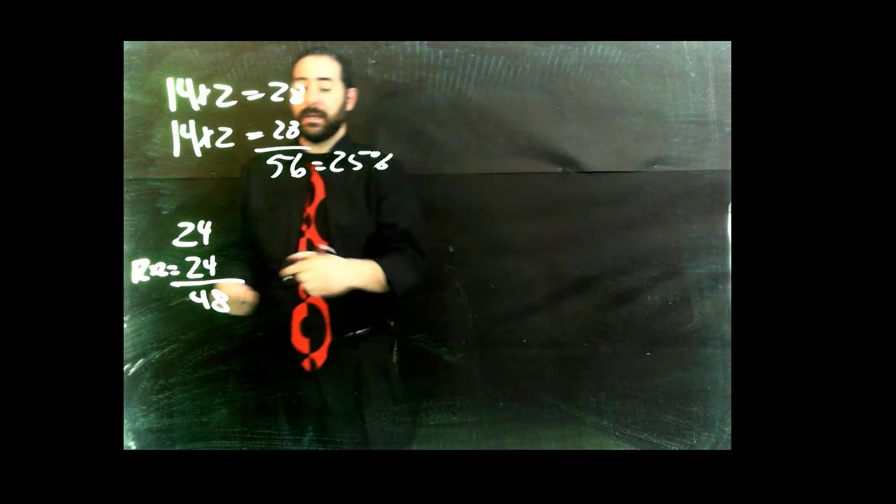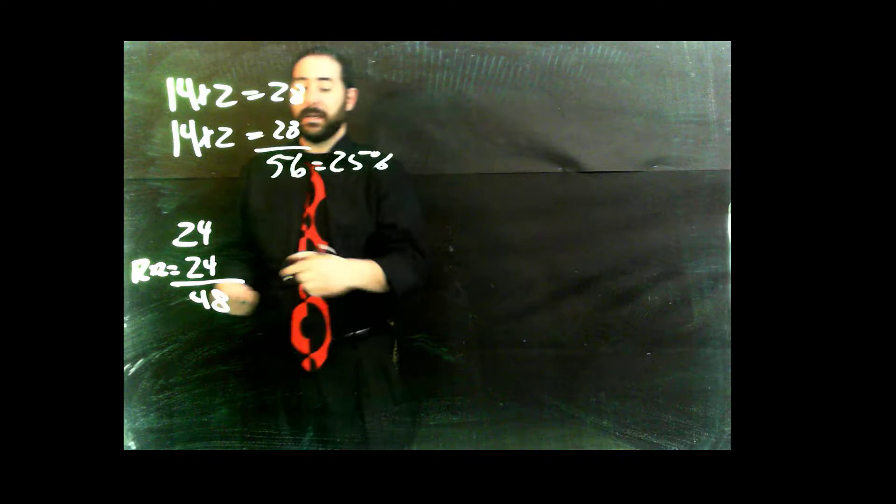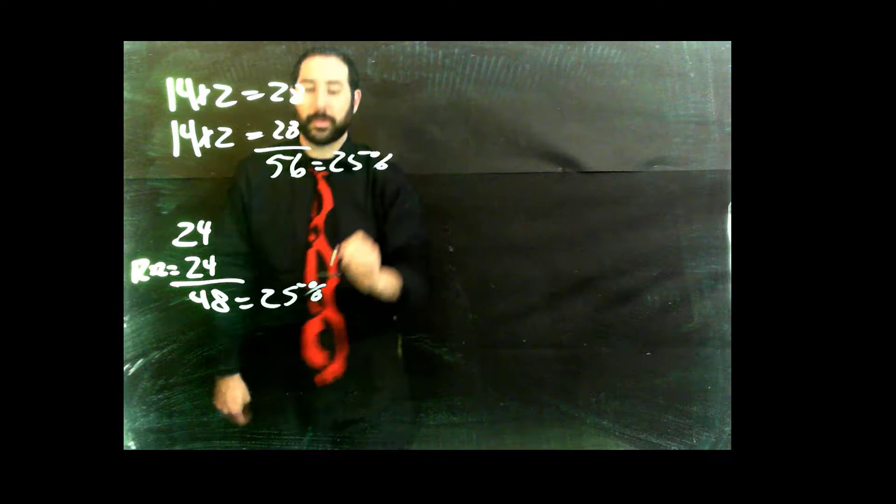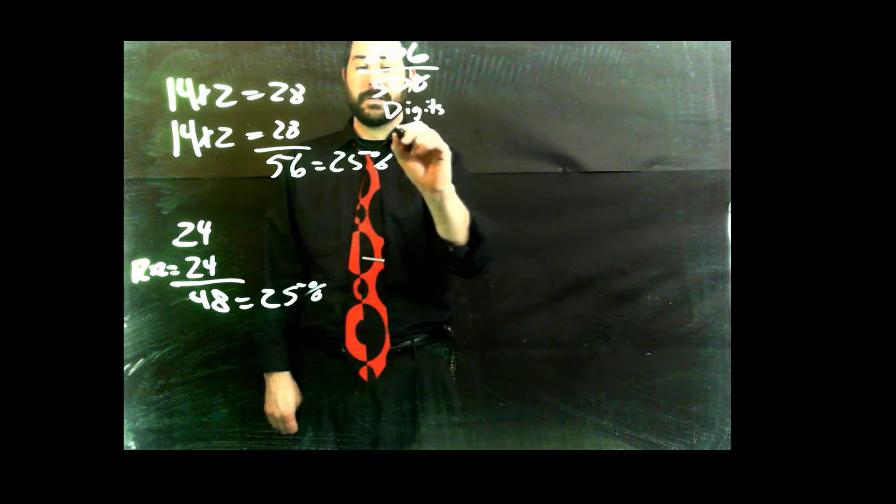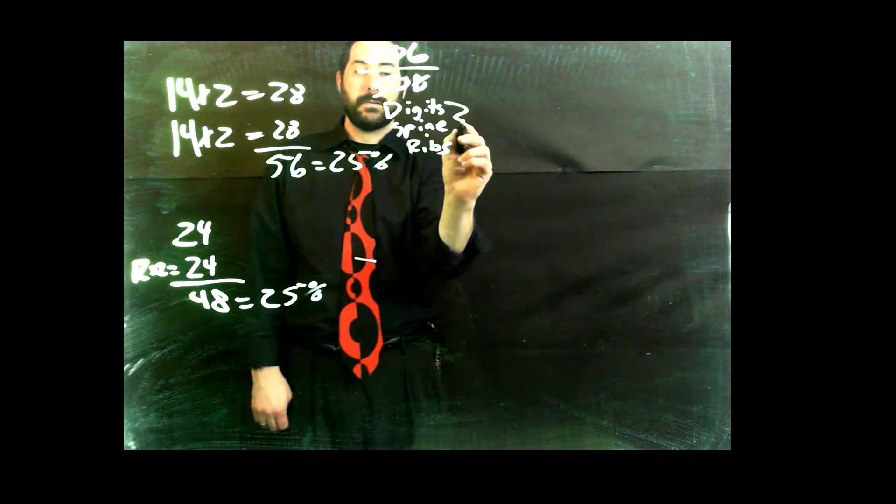And 48 is pretty close to 50, so we're just going to give it the benefit of the doubt. And we're going to say, hey, look, there's another 25%. So of our 206 bones, 50% are in our digits, spine, and ribs. Three things. Just those three right there. That's not so bad, actually, when you kind of look at it from that perspective.